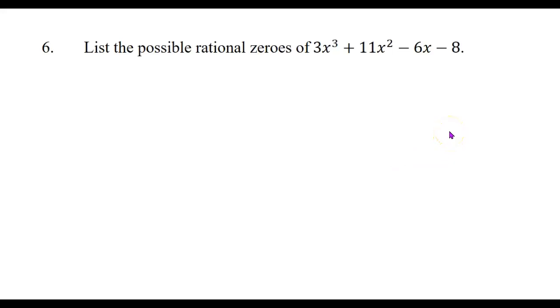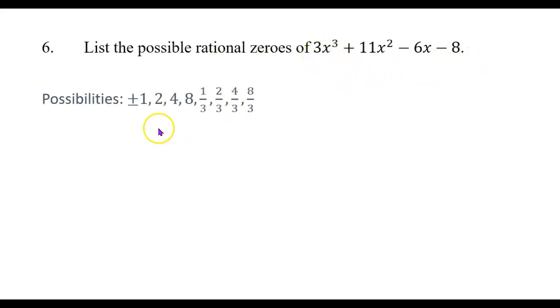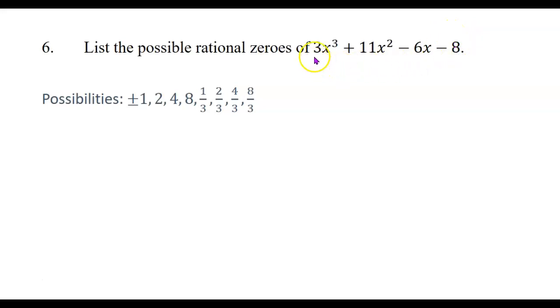Let's try another example: list the possible rational zeros of 3x cubed plus 11x squared minus 6x minus 8. The possibilities are plus or minus: 1 over 1, 2 over 1, 4 over 1, 8 over 1, 1 over 3, 2 over 3, 4 over 3, or 8 over 3. We need one of the factors of the constant term — 1, 2, 4, or 8 — over one of the factors of the leading coefficient — 1 or 3. In the next video, we'll use this to actually find zeros of polynomials.